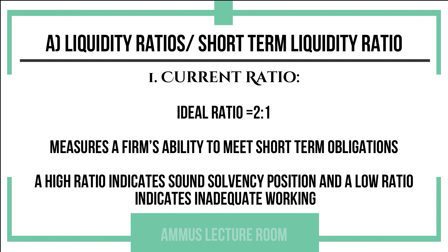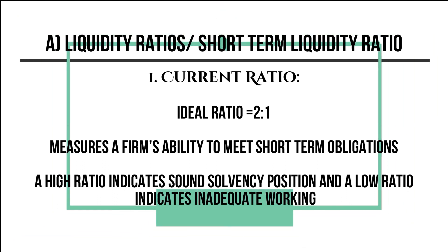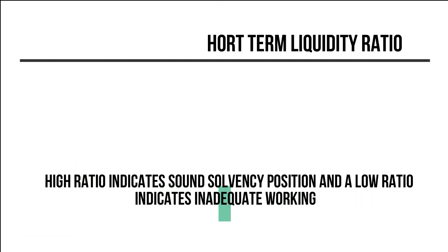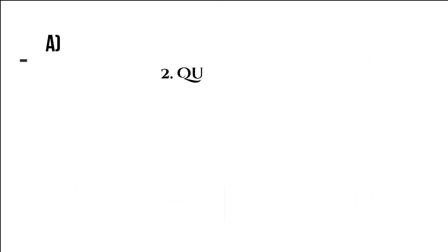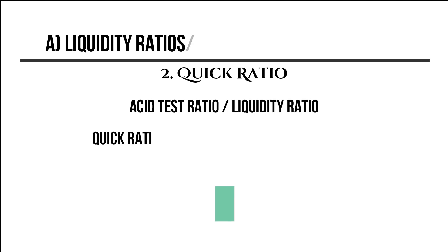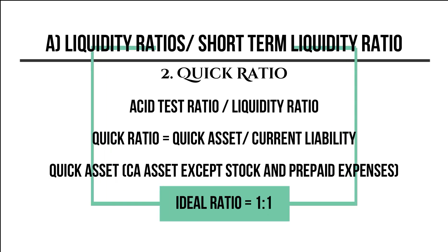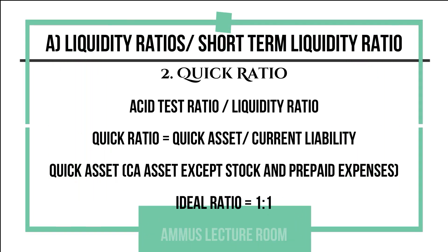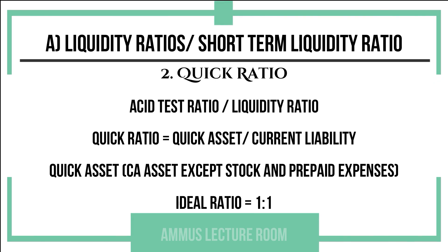A high current ratio indicates a sound solvency position, while a low current ratio indicates inadequate working capital. The next liquidity ratio is the quick ratio (QQ ratio), also called the acid test ratio or liquidity ratio.